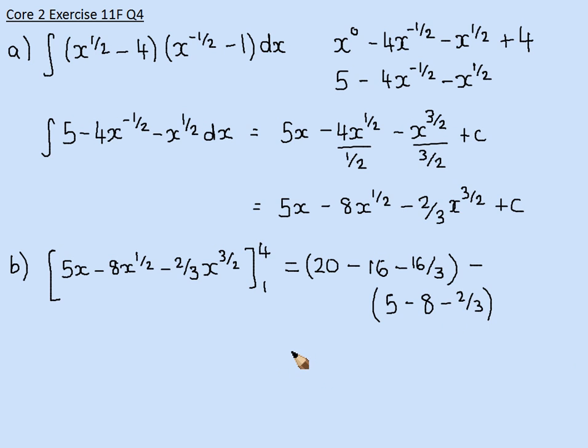Now, when I simplify those, I get minus 1 and 1 third for the first bracket. And for the second bracket, I've got 5 minus 8 minus 2 thirds, so that's minus 3 and 2 thirds. That's the key bit here. Don't forget, that's what you get when you work out what it is for 4. That's what you get when you work out what it is for 1. And you've got to subtract those.